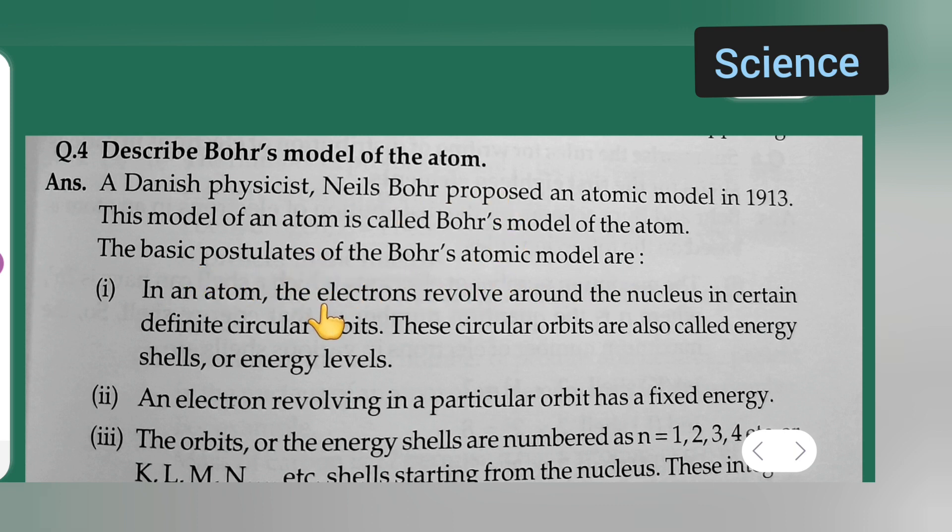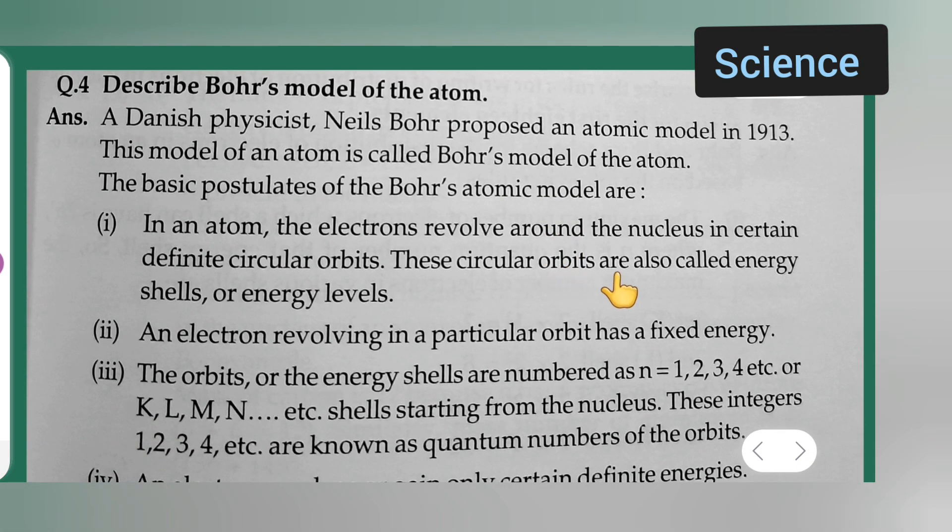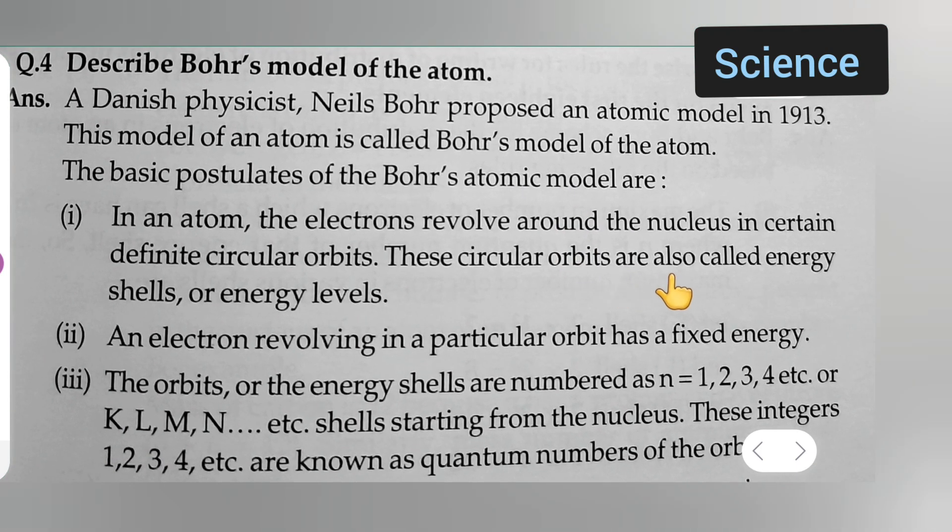Now we are looking for the basic postulates of this Bohr's atomic model. So, the first postulate is: In an atom, the electrons revolve around the nucleus in certain definite circular orbits. These circular orbits are also called energy shells or energy levels.